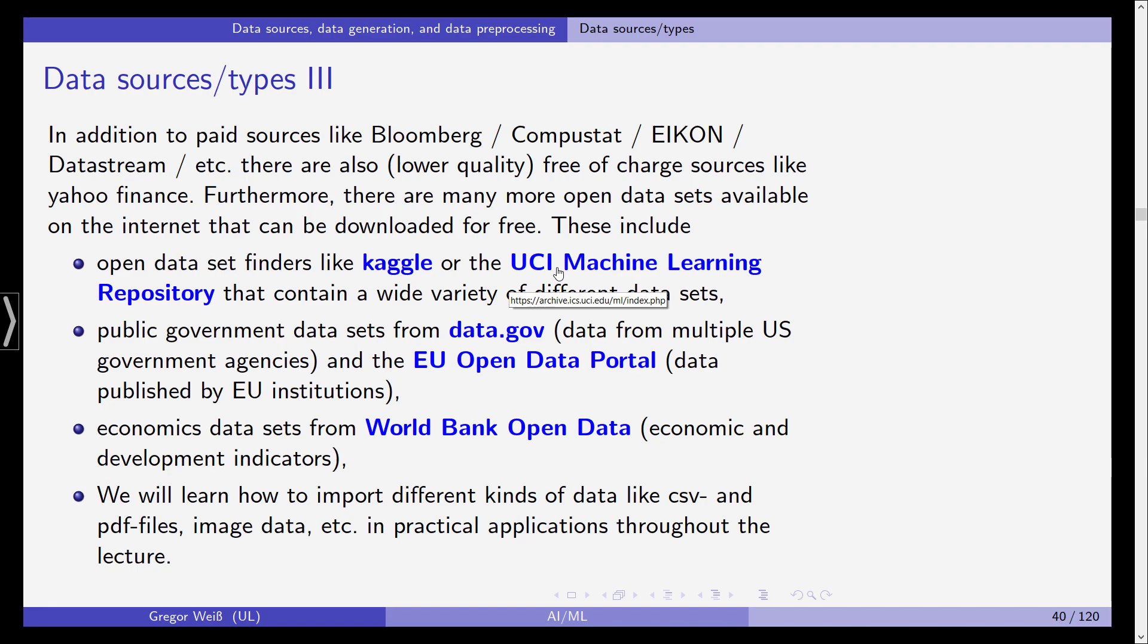You can also get data from public government agencies - for example, in the US from data.gov and in the European Union. You can get indices and census data. This is maybe not alternative data, has been used in economics for a long time, but it's the first step to complement traditional capital markets data with more alternative data samples. Same with the economics data sets from the World Bank.